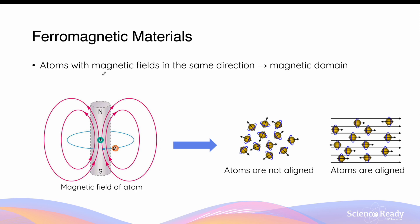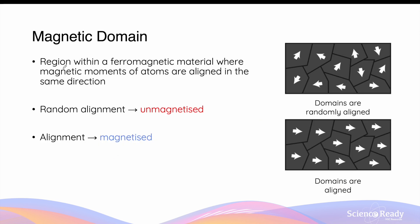Atoms with magnetic fields due to unpaired electrons also have a direction — a north and south pole. We can have two situations: one where the fields of the atoms are directed in random directions, or one where they are aligned in the same direction. When the fields of atoms are aligned in the same direction, this region is known as a magnetic domain. A magnetic domain refers to a region in a ferromagnetic material where the magnetic moments of atoms are aligned in the same direction.